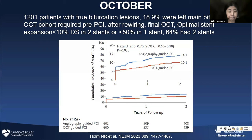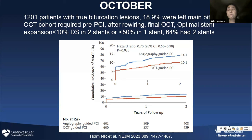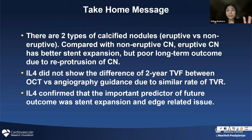Finally, one comment about the October study, also presented at the same time — 1,200 patients — which clearly showed OCT is better. All patients had true bifurcation lesions; 90% were left main bifurcation, and 64% had a two-stent technique. OCT was performed before PCI, after rewiring, and as a final OCT. Optimal stent criteria were quite consistent with Illuminium-4. Today I talked about two completely different but very new topics, and I hope you learned something.